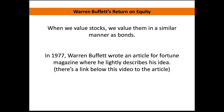When we value stocks we value them in a very similar manner to the way we value bonds. In 1977 Warren Buffett actually wrote an article for Fortune magazine before he became really famous and well-known as a stock and bond investor. In that article he talks about how inflation eats away at bonds and equities, which is contrary to what John Burr Williams wrote in his Harvard thesis and also goes against what Benjamin Graham wrote about in The Intelligent Investor.